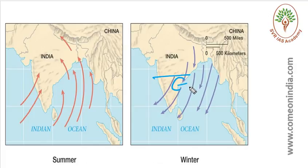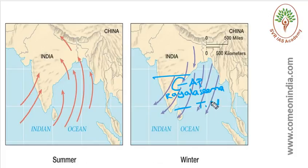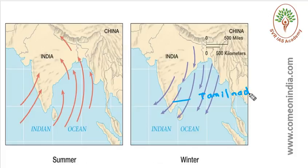It brings rainfall to coastal Andhra Pradesh, Rayalaseema, Tamil Nadu, and Pondicherry. For Tamil Nadu, it receives more than 50% of its rainfall from the Northeast monsoon during the October to December period.